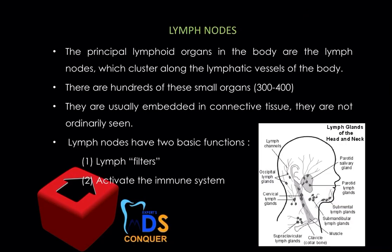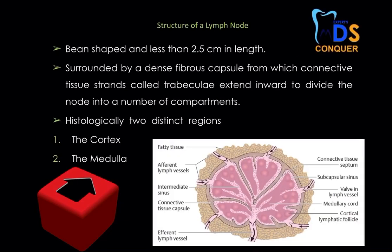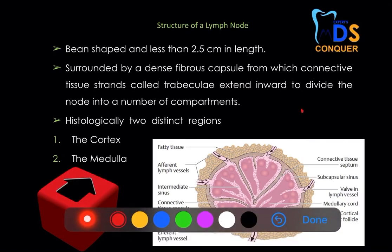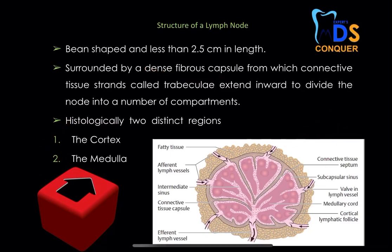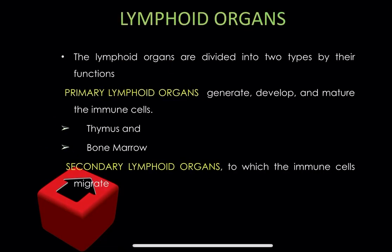Lymph nodes have two major functions: they filter lymph and activate the immune system. Structurally, lymph nodes are bean-shaped structures. Histologically, they have two distinct regions — the cortex and the medulla. They are encapsulated structures with connecting strands called trabeculae. Do draw this lymph node diagram if a lymphatic system essay question is asked — it is simple to draw and will fetch you more marks.